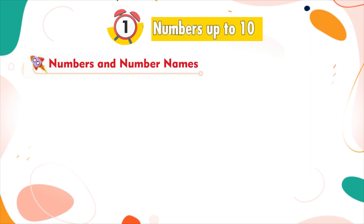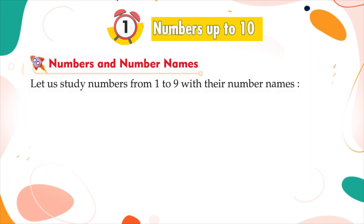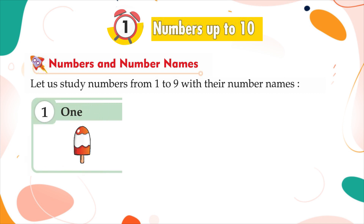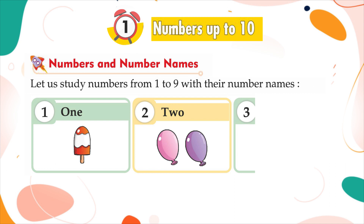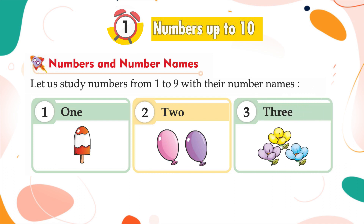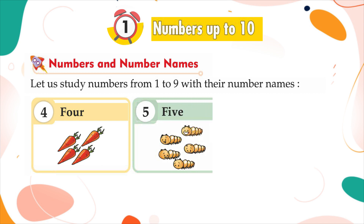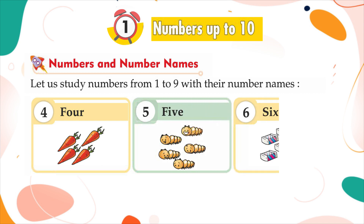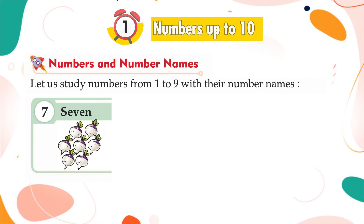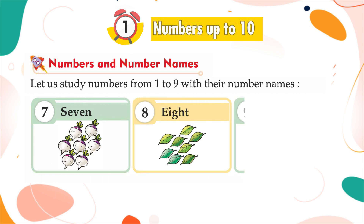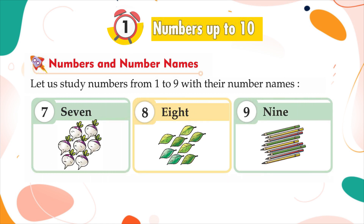Numbers and number names. Let us study numbers from 1 to 9 with their number names. O-N-E 1, T-W-O 2, T-H-R-E-E 3, F-O-U-R 4, F-I-V-E 5, S-I-X 6, S-E-V-E-N 7, E-I-G-H-T 8, N-I-N-E 9.